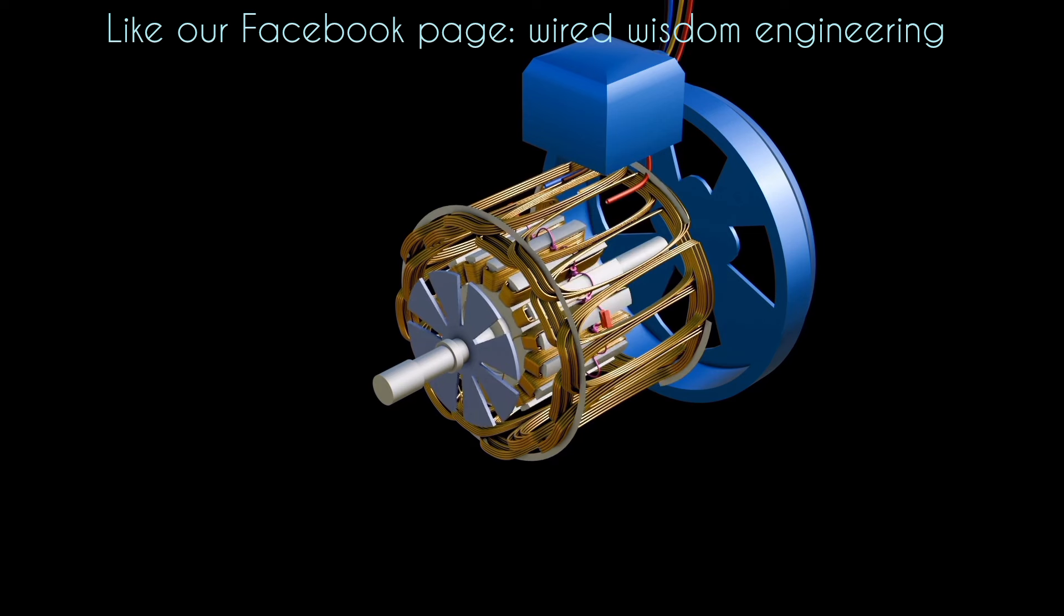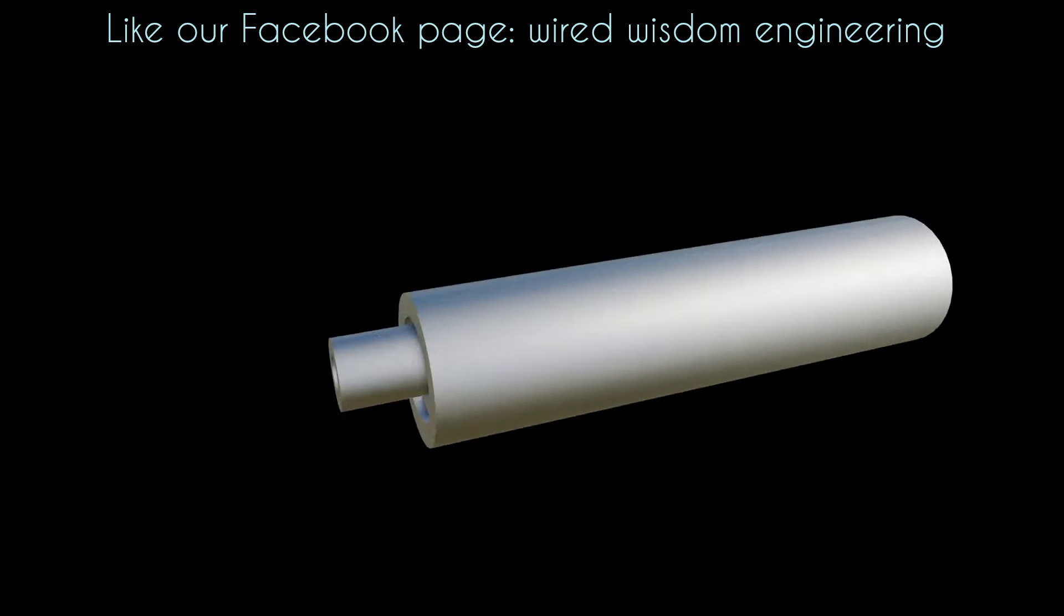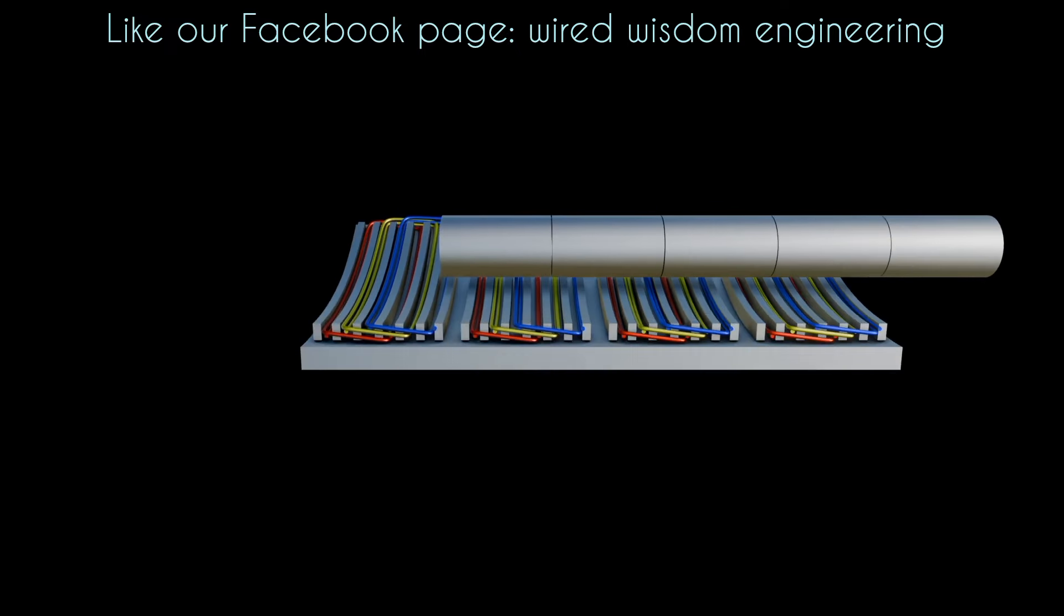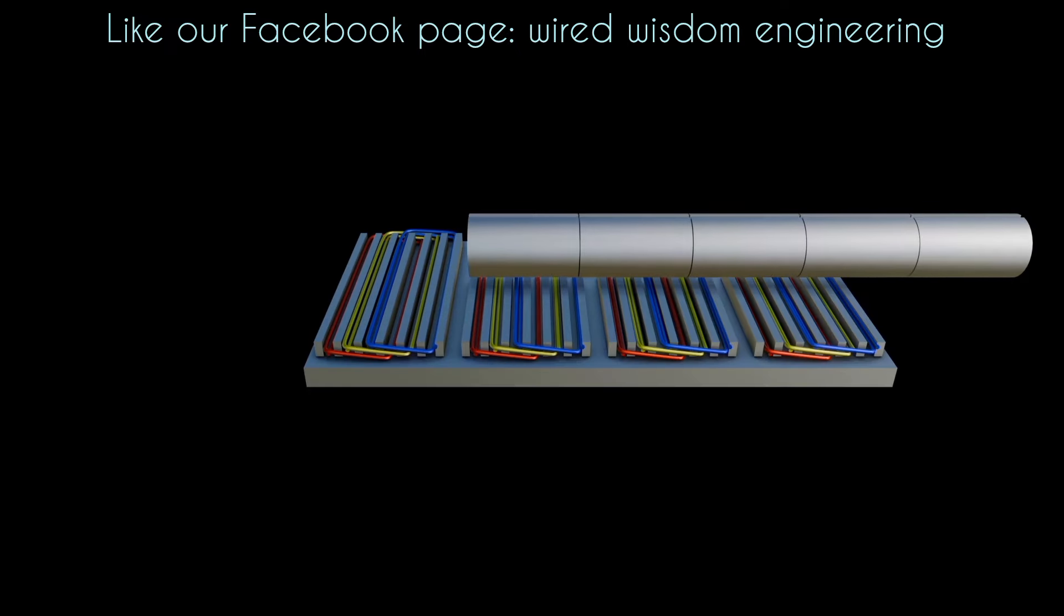The construction of a linear motor is quite similar to a three-phase induction motor. For instance, imagine that the stator of the induction motor is cut and spread out flat. This forms the primary of the linear motor system.